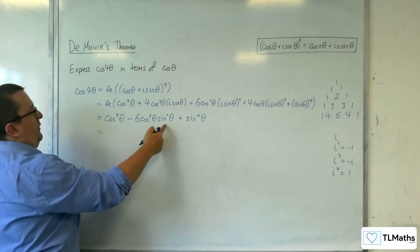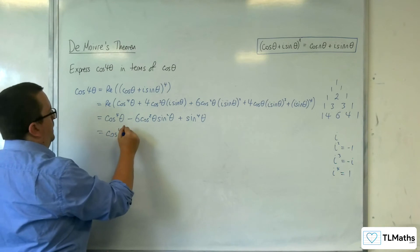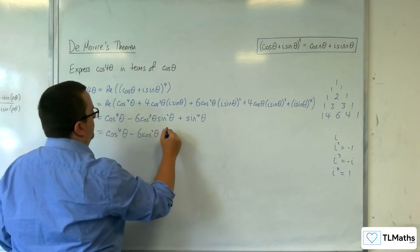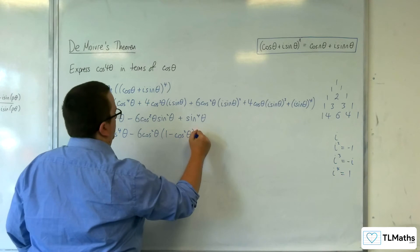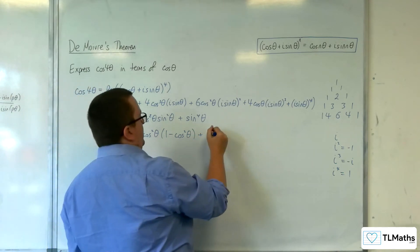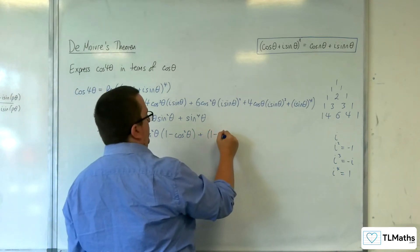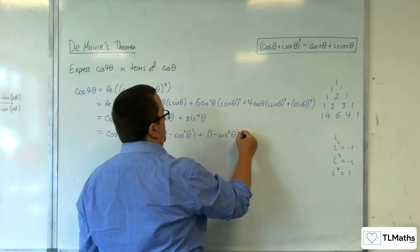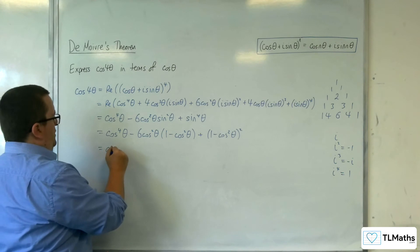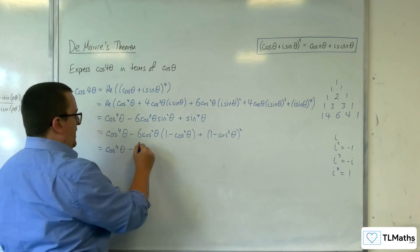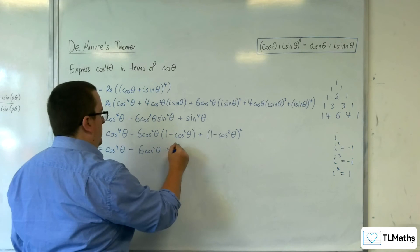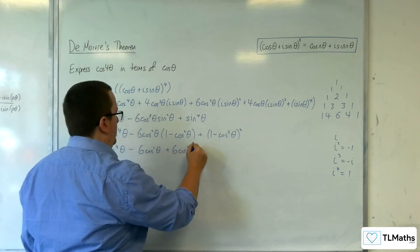So just replace the sine squared with 1 minus cosine squared, and the sine to the 4 theta with 1 minus cosine squared theta, all squared. So cosine to the 4 theta, take away 6 cosine squared theta plus 6 cosine to the 4 theta.